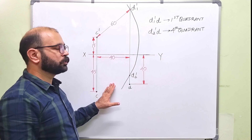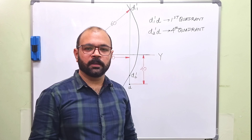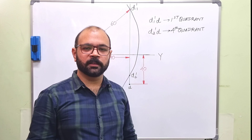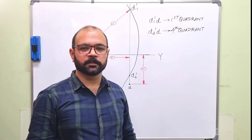So this is the solution to the question. There are two possible quadrants for point D: the first quadrant and the fourth quadrant. I hope this question is clear to you. Thank you very much.